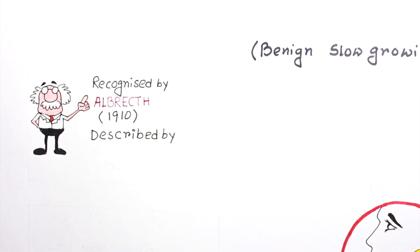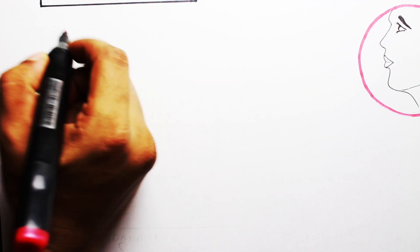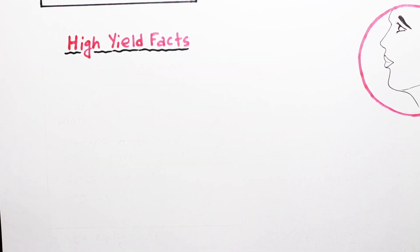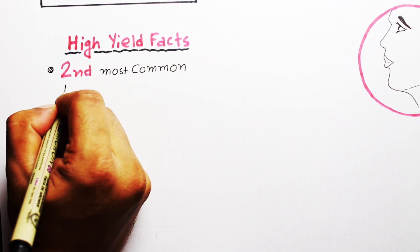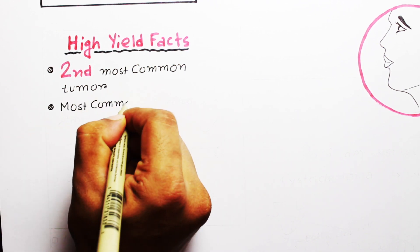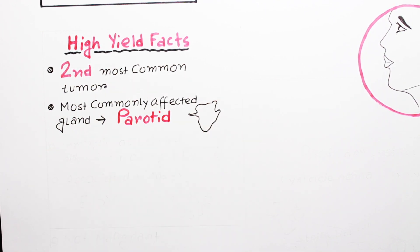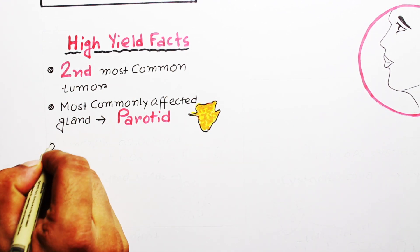Some highlights about Warthin's tumor: it is the second most common tumor of the salivary gland. You should remember that pleomorphic adenoma is the most common salivary gland neoplasm. The most commonly affected gland is the parotid gland, and it is strongly associated with smoking.